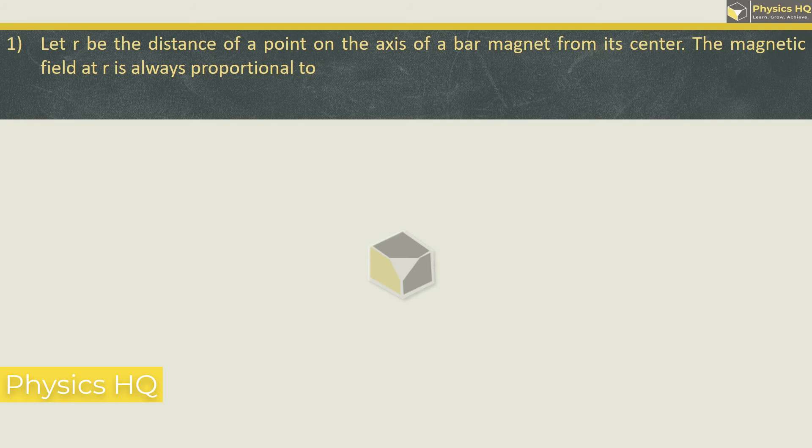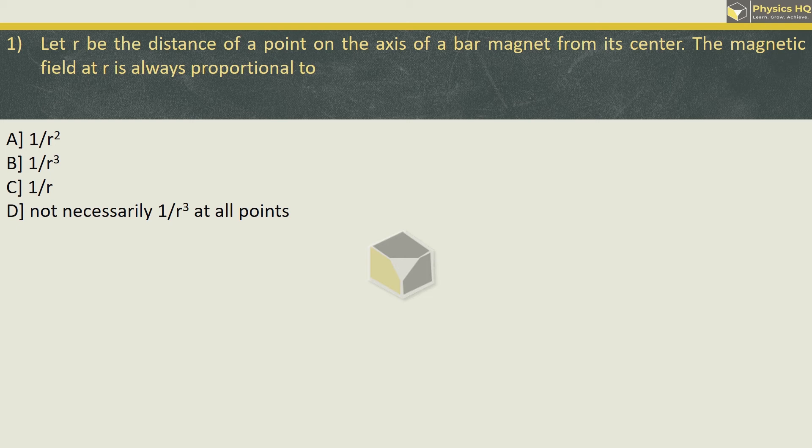Let R be the distance of a point on the axis of a bar magnet from its center. The magnetic field at R is always proportional to 1 by R squared, 1 by R cubed, 1 by R, or not necessarily 1 by R cubed at all points.